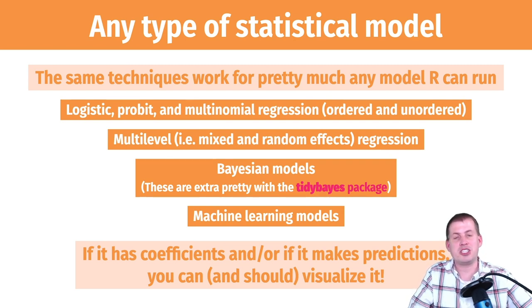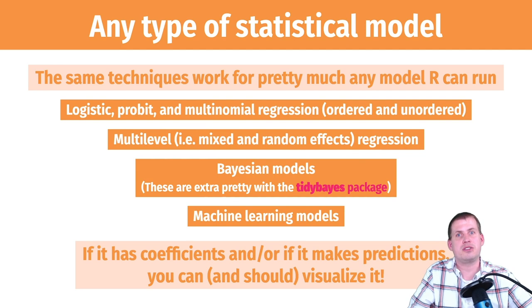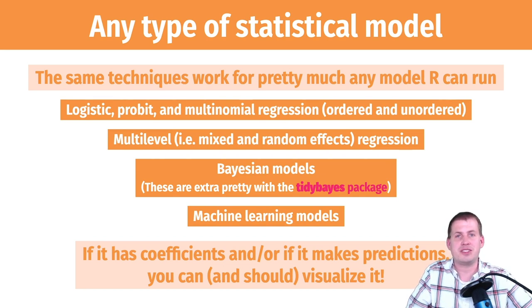Basically, if the model has coefficients or if it makes predictions, you can visualize it — either using a coefficient plot or marginal effects plots. You're not limited to just a scatter plot with two variables; you can map all sorts of other variables to show all sorts of relationships. The example and assignment for today will help you get practice with this, and hopefully you'll be able to communicate multiple regression results to the general public.